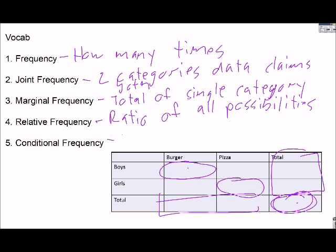Conditional is the ratio of a single category. So I pick a boy out of people who just like burgers. I pick a burger person out of just the boys. So I'm either excluding pizza or excluding girls in this.